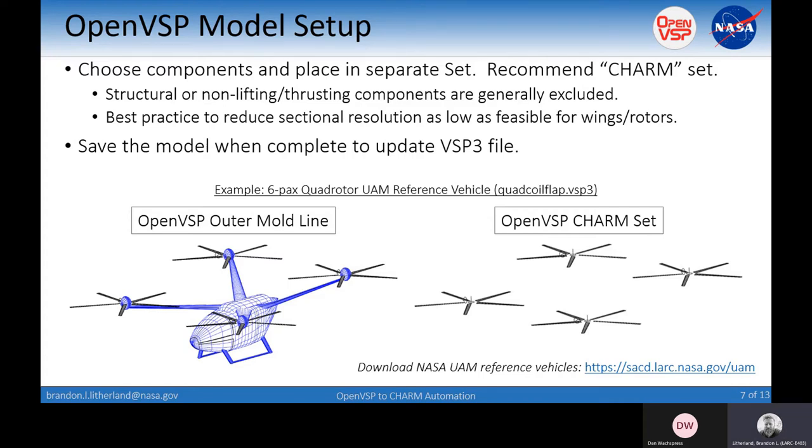To make sure that the model is updated in memory, make sure and save the model so that all the changes you make in the OpenVSP model are updated and stored so it can be queried. A word that you can download all these NASA UAM reference vehicles at the link here at the bottom of the screen. This is an example of the six-pack quadrotor reference vehicle.